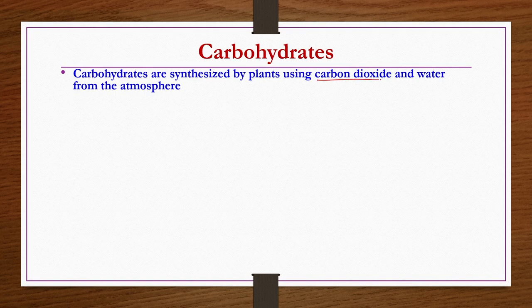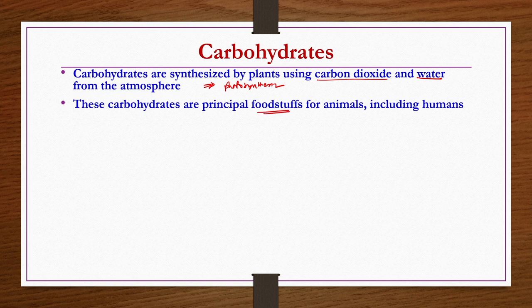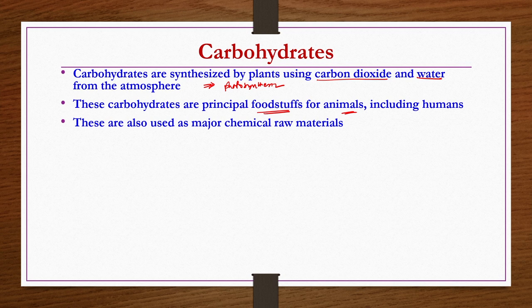Before going into the details of such industrial products, we will have a brief introduction on carbohydrates. As we all know, carbohydrates are synthesized by plants using carbon dioxide and water from the atmosphere, and by utilizing energy from the sun through photosynthesis. These carbohydrates are principal foodstuffs for animals including human beings, and are also used as major chemical raw materials in fermentation industries.